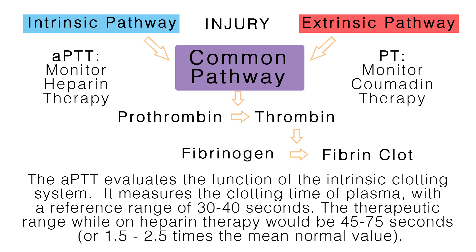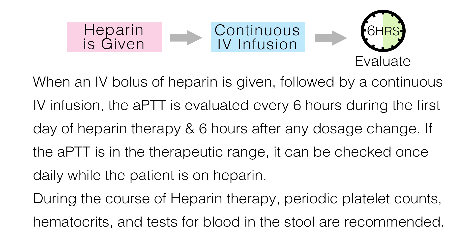When an IV bolus of heparin is given followed by a continuous IV infusion, the APTT is evaluated every six hours during the first day of heparin therapy and six hours after any dosage change. If the APTT is in the therapeutic range, it can be checked once daily while the patient is on heparin. During the course of heparin therapy, periodic platelet counts, hematocrits, and tests for blood in the stool are recommended. The APTT is not recommended for monitoring low molecular weight heparin, which will be discussed more later.